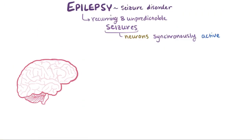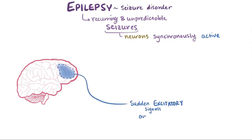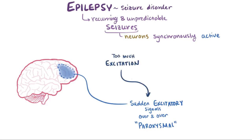During a seizure, clusters of neurons in the brain become temporarily impaired and start sending out a ton of excitatory signals over and over again, and these are sometimes said to be paroxysmal. These paroxysmal electrical discharges are thought to happen due to either too much excitation or too little inhibition, which are kind of two sides of the same coin.